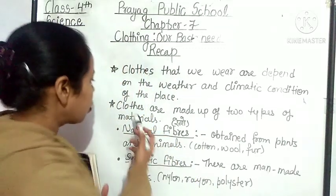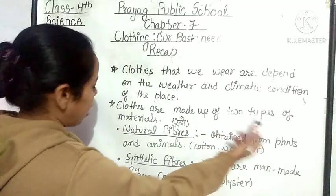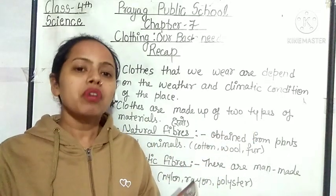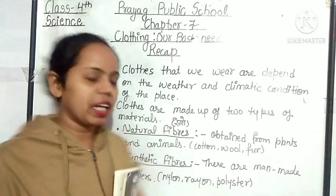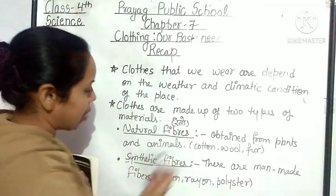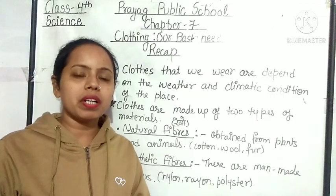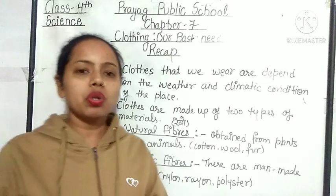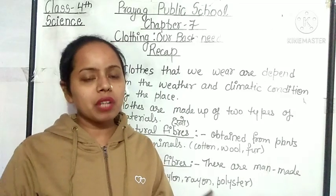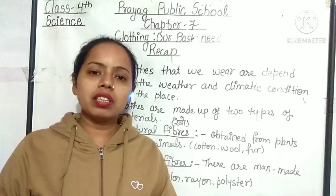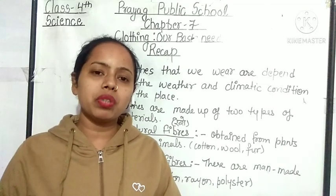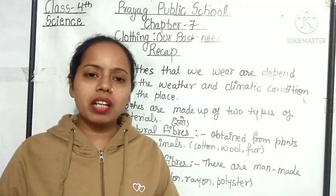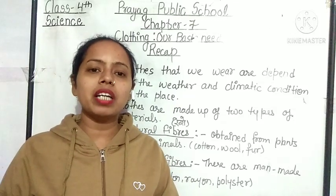Clothes are made up of two types of materials. हम जो भी कपड़े पहनते हैं, वो दो तरह के materials से बने होते हैं। पहला है natural fiber — fiber को हम हिंदी में धागे बोलते हैं। अगर आप अपने कपड़ों को ध्यान से देखेंगे, तो धागे आपस में एक दूसरे से बुने रहते हैं और इस तरह से fabric तयार होता है। ये धागे दो तरह के होते हैं — पहला natural, दूसरा man-made या synthetic।